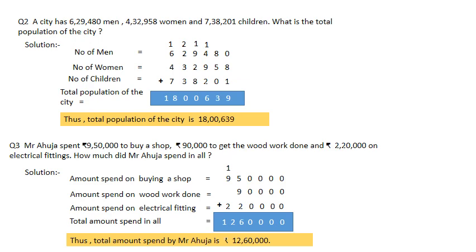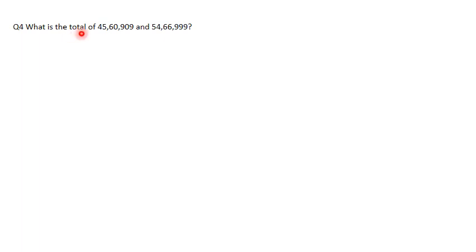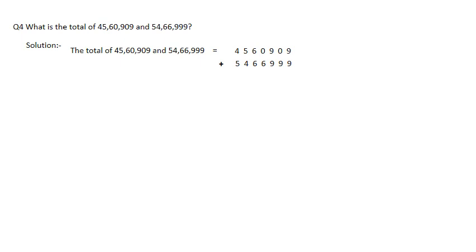Question number 4. What is the total of 45,60,909 and 54,66,999? This is a simple question — 'total' means we have to find the sum, so we do addition of these two numbers. We write the solution in horizontal form, then in vertical form, and solve by adding. Come on, do it fast and then check your answer.